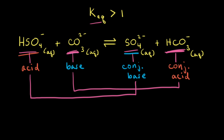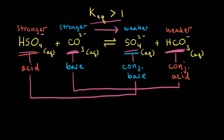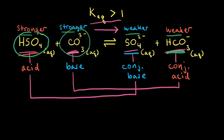The equilibrium constant for this reaction at 25 degrees Celsius is greater than 1. Therefore, the equilibrium favors the formation of the products. Because the equilibrium favors the weaker acid and the weaker base, the weaker acid and weaker base must be on the product side, and the stronger acid and stronger base are on the reactant side. Therefore, the hydrogen sulfate anion is a stronger acid than the hydrogen carbonate anion, and the carbonate anion is a stronger base than the sulfate anion.